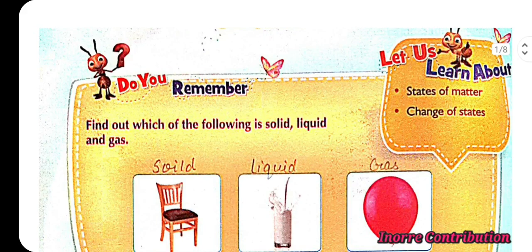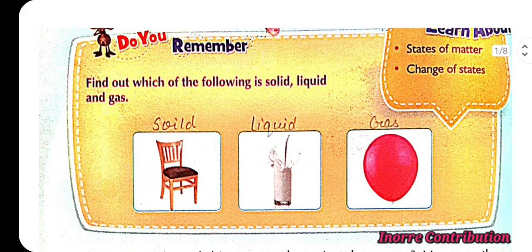Do you remember? Find out which of the following is solid, liquid and gas. So, first picture is of a chair. Chair is example of solid. Second picture is of milk in a glass. This is example of liquid. Third one, balloon. Balloon is example of gas.